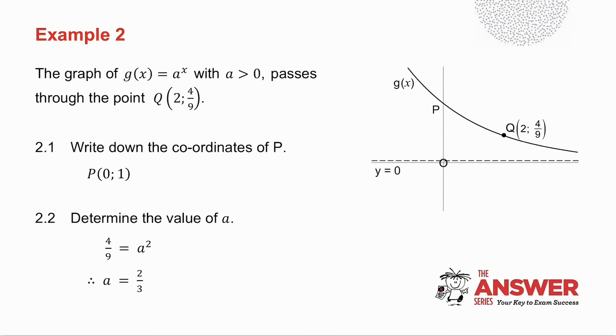To write down the coordinates of p, notice that p is the y-intercept of the graph. How do you find the y-intercept of any graph? You make x equal to 0. And a to the power 0 is 1, which means that p's coordinate is 0, 1.